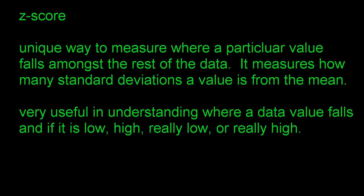Another measure of position is the Z-score. A Z-score measures how many standard deviations a value is from the mean, which is very useful for understanding where a data value falls — whether it's low, high, or extreme. The formula is: Z = (X − mean) / standard deviation.